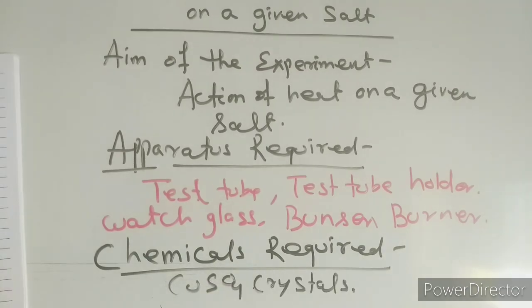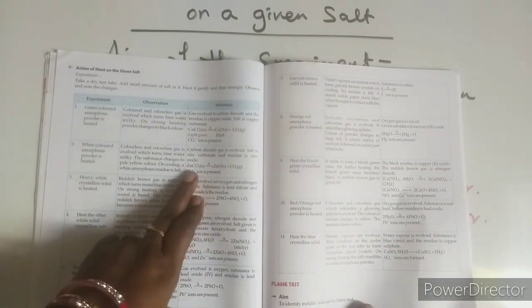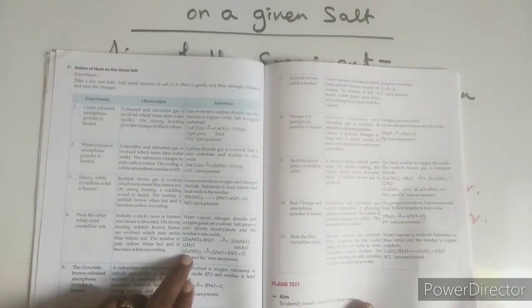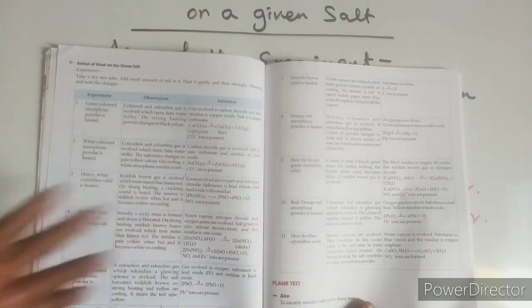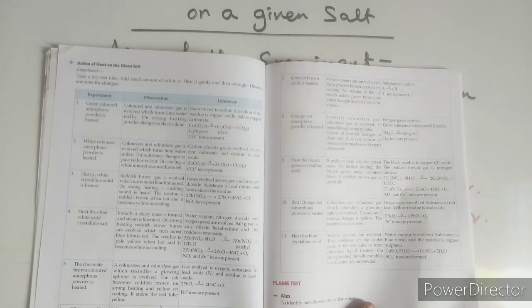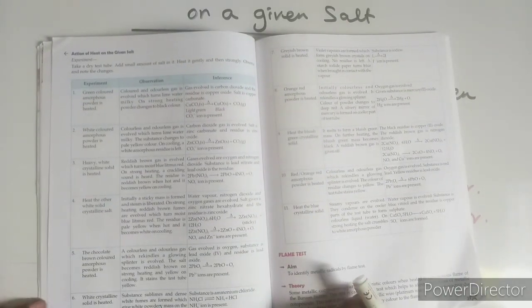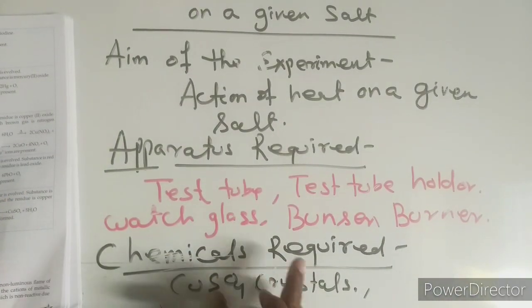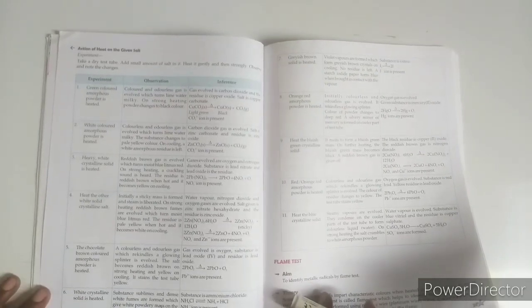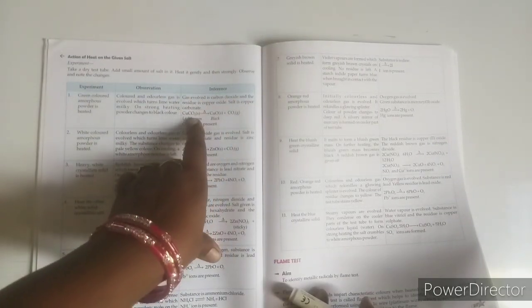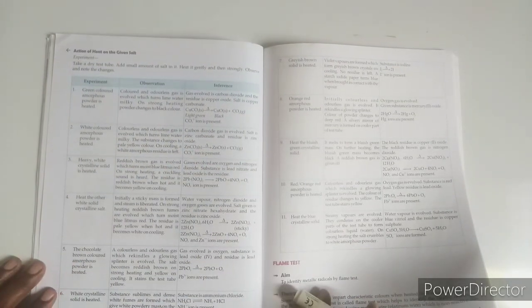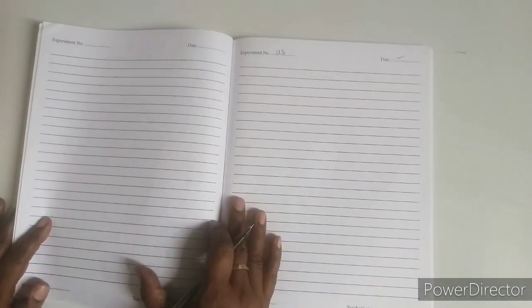Whatever salt is given to you — for example, zinc carbonate, copper carbonate, lead nitrate, zinc nitrate, PbO₂, ammonium chloride, copper nitrate, or iodine crystals — out of these, whatever will be given to you, that one you list as chemicals required. Then write the three columns: experiment, observation, and inference, along with equations.